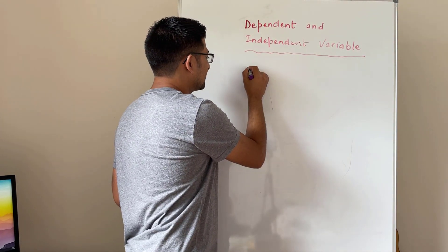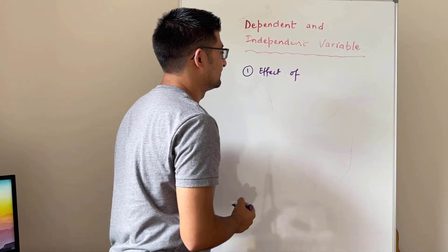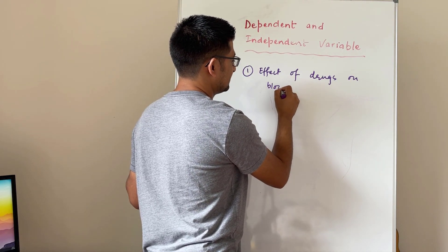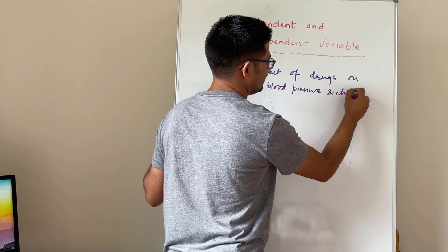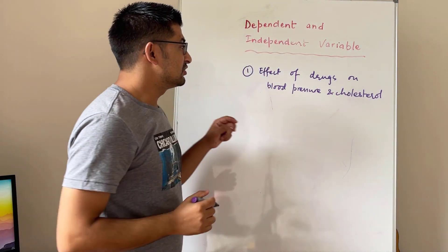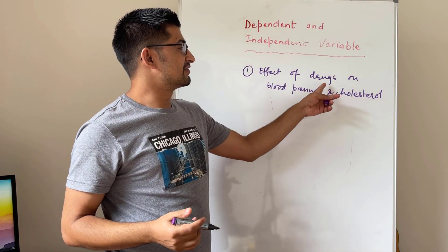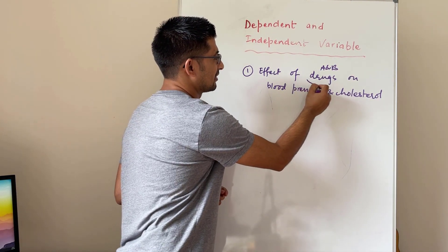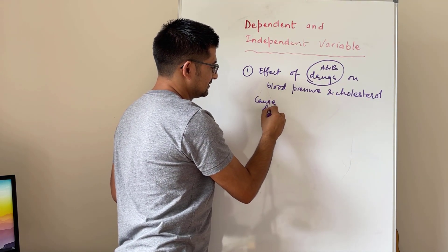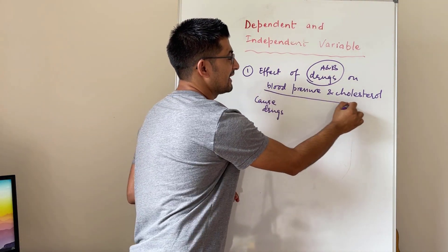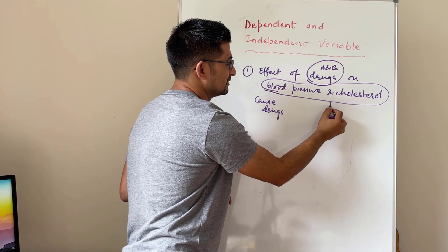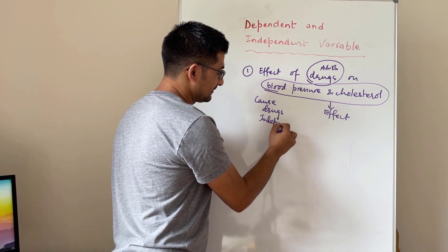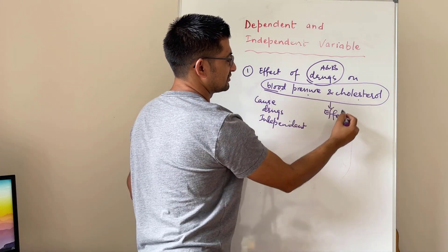Example one could be the effect of drugs — let's say drugs A and B — on blood pressure and cholesterol. So you as a researcher are studying the impact of these drugs on blood pressure and cholesterol. The cause here is drugs, and because of that cause the impact would be on blood pressure and cholesterol, so that is the effect. These drugs are called the independent variable, and blood pressure and cholesterol are the dependent variable.